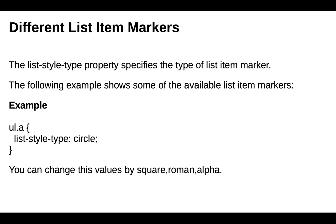For different list item markers, we use the list-style-type property that specifies the type of list item marker. The following examples show some of the available list item markers. We can use the list-style-type property with values like circle, square, upper-roman, or lower-roman.